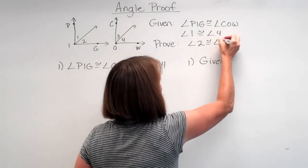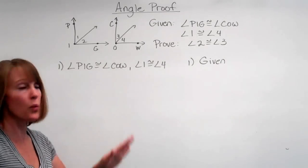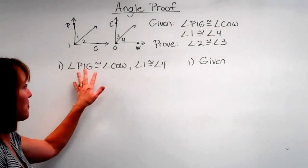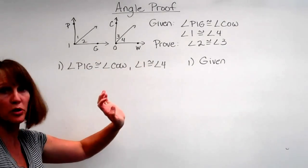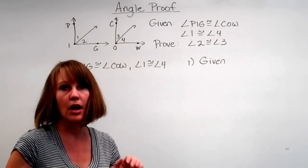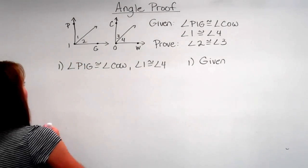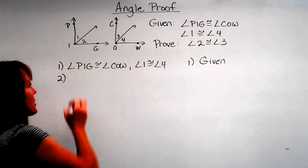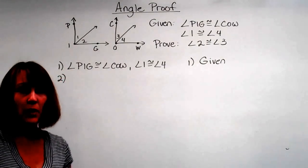We write our first statement — what we were given: angle PIG is congruent to angle COW, and angle one is congruent to angle four. That was given.